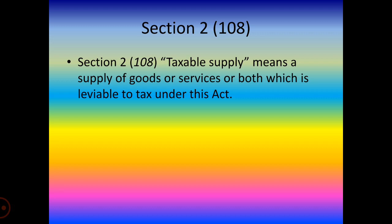The central tax on the supply of petroleum crude, high-speed diesel, motor spirit (commonly known as petrol), natural gas, and aviation turbine fuel shall be levied under the Central Goods and Service Tax on the date as notified by the government on the recommendation of the GST Council.